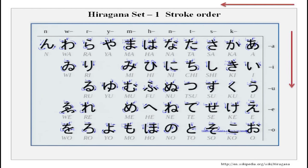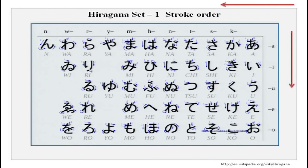You will notice that all these consonants — K, S, T, N, H, M — are joining with vowels, and the syllable is made. In Japanese, please remember all syllables will always have a vowel at the end. No syllable is complete without a vowel, except for one. Then we come to the Y series: YA, YU, YO. The R series: RA, RI, RU, RE, RO. Then WA. And finally N — this is the only one which does not end in a vowel.